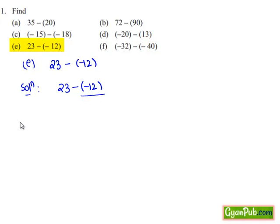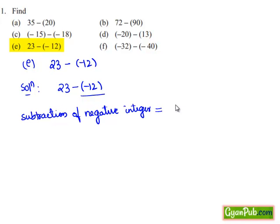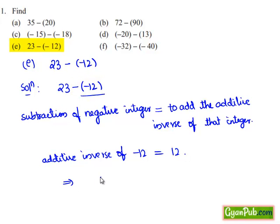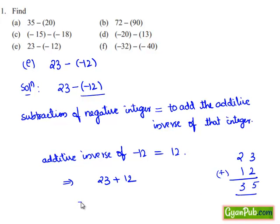We have a formula for subtraction of negative integers: subtraction of a negative integer is equal to adding the additive inverse of that integer. The additive inverse of minus 12 is plus 12. So we are adding 12 to 23. We have two positive integers to add: 3 plus 2 is 5, 2 plus 1 is 3, so we get 35.